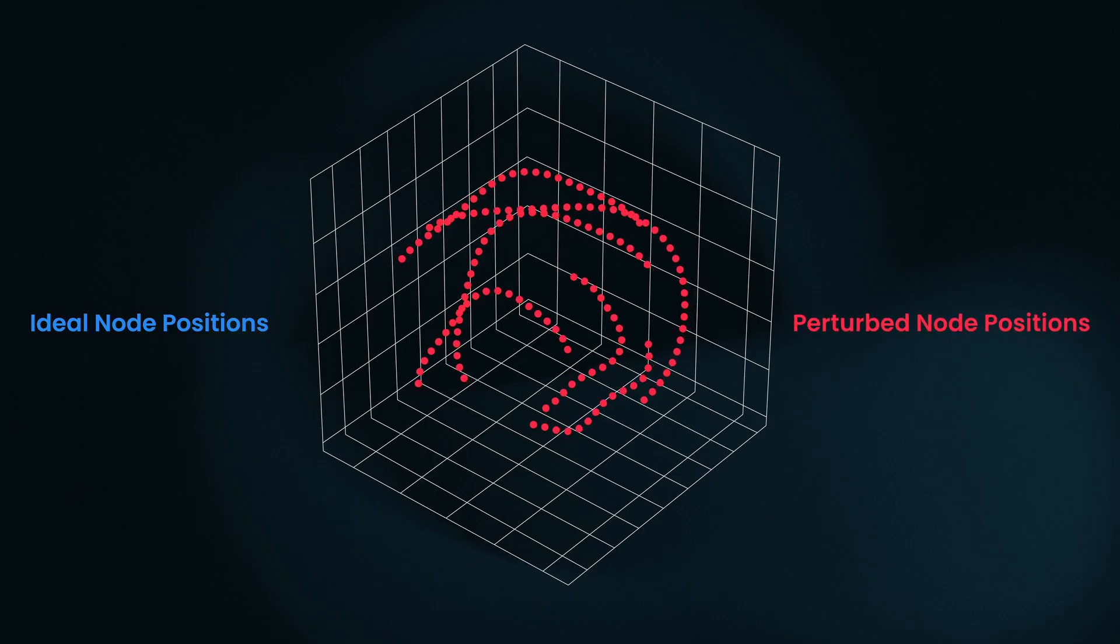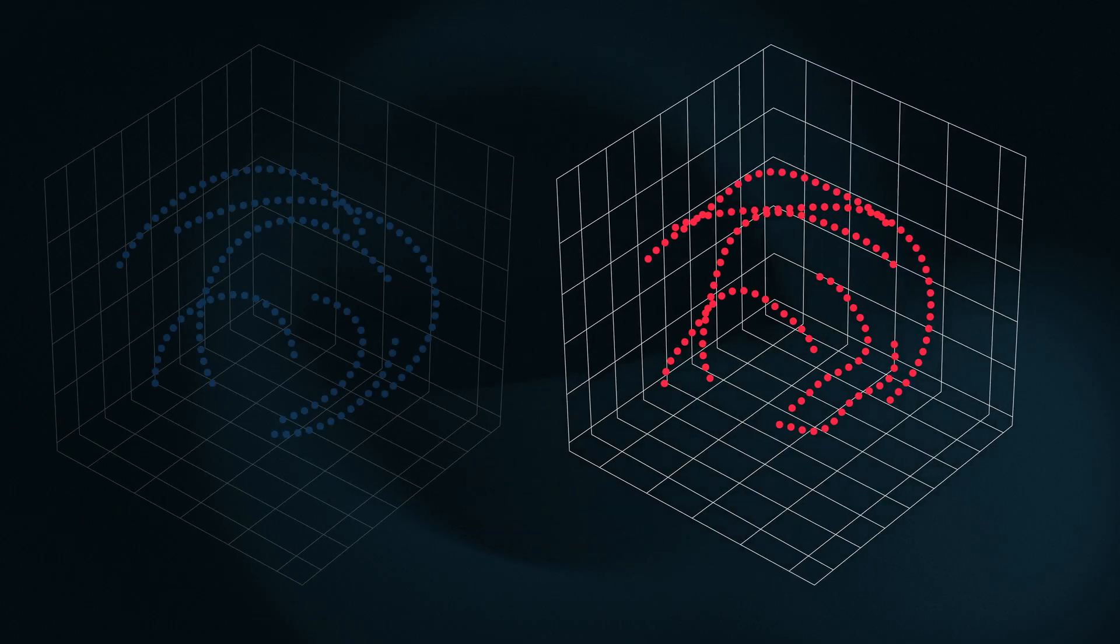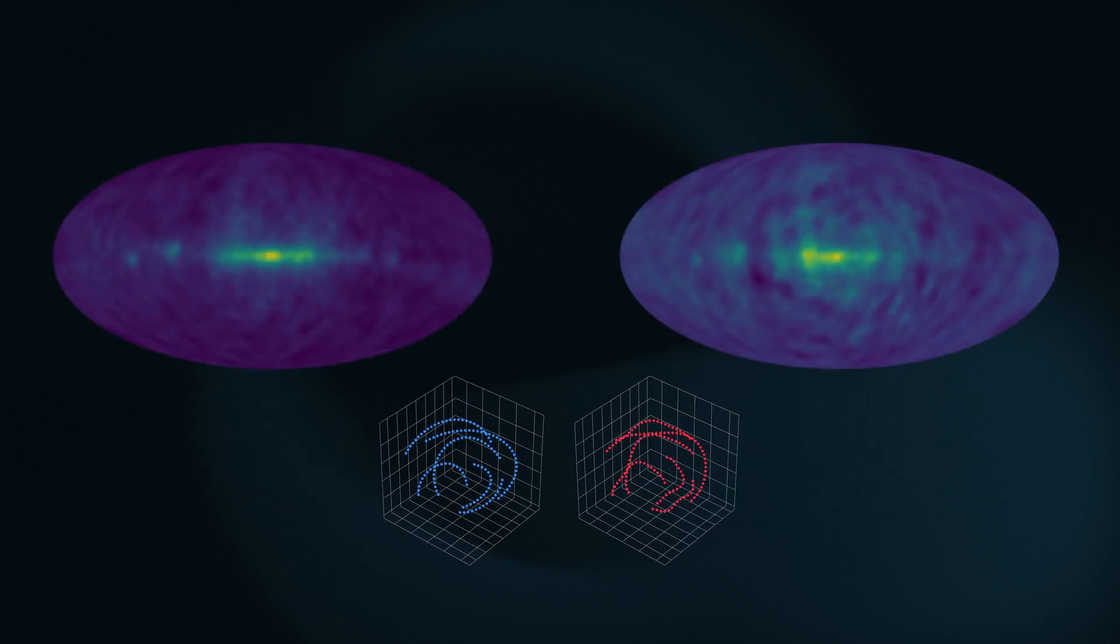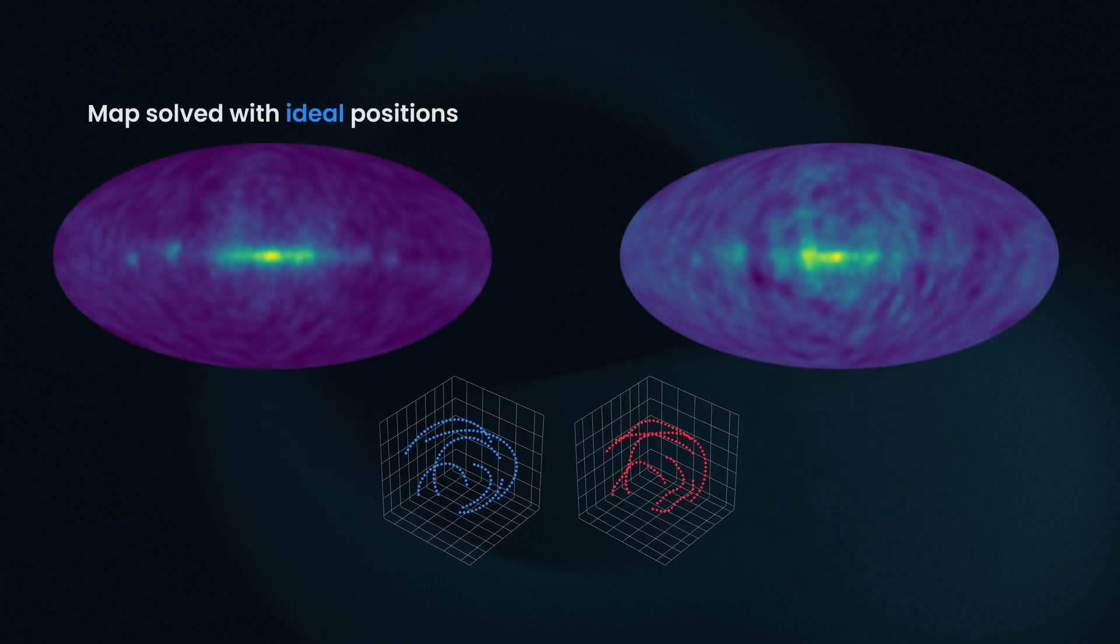In this example, the position of the nodes are randomly perturbed by a small amount. This positional error propagates through the steps of the simulation to result in a distorted image. By studying what happens in cases like this, we can set realistic bounds on GOLO's performance.